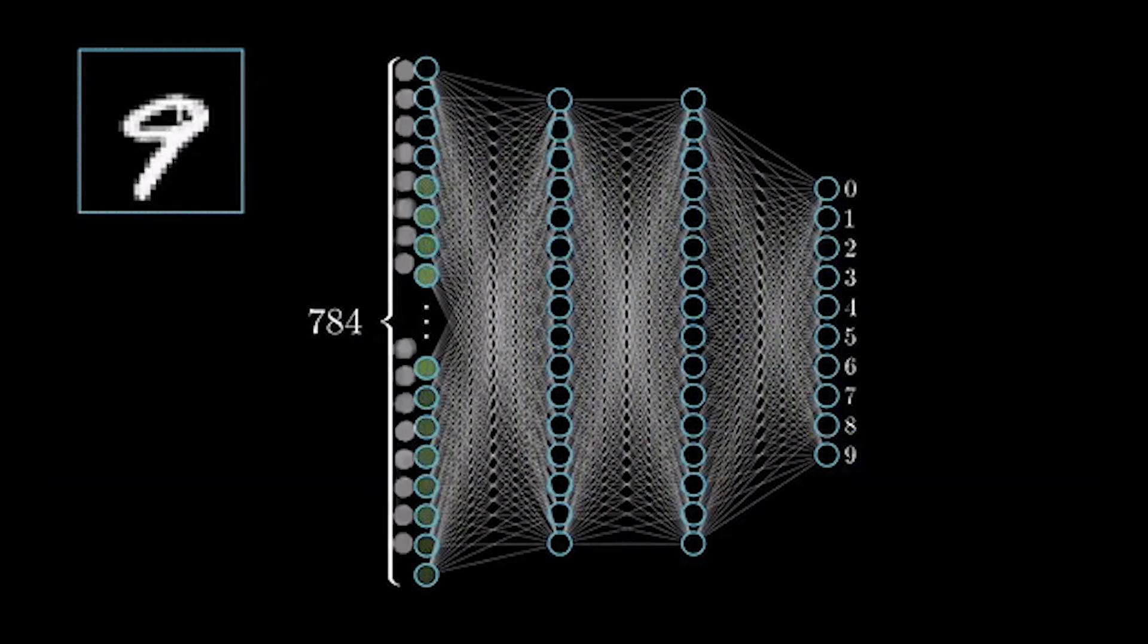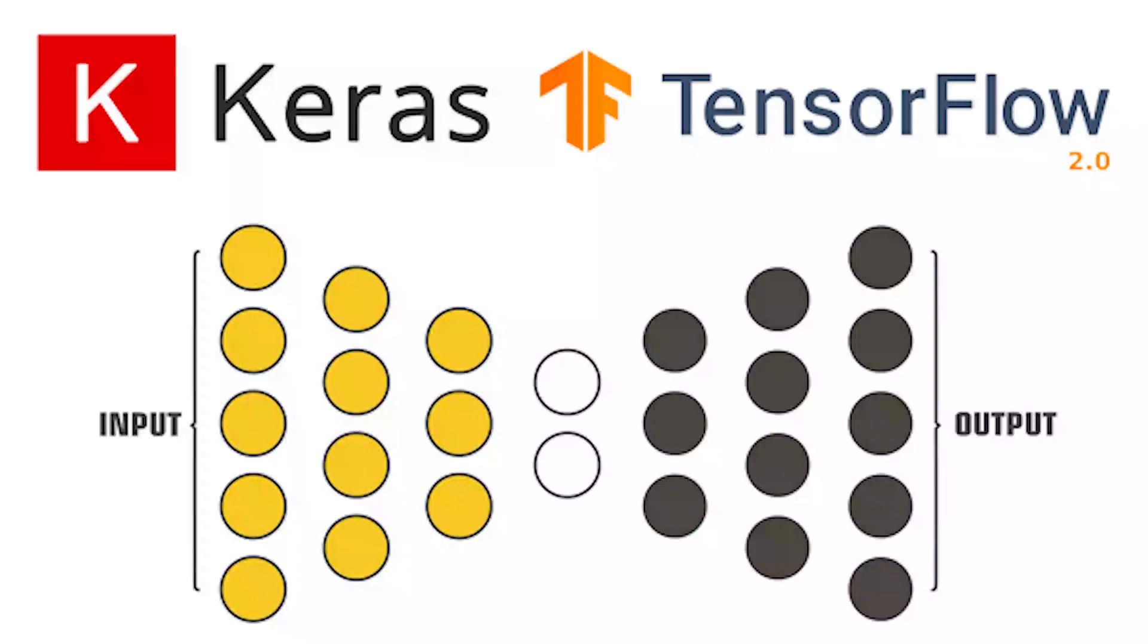All of this might seem like magic and it might seem like it requires a complex understanding of mathematics. In truth, it doesn't, and that's thanks to two recent additions to computational software—and that's TensorFlow and Keras. TensorFlow and Keras allow us to easily create and train neural networks without a large understanding of the mathematics behind them.